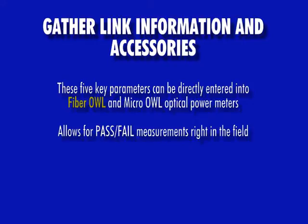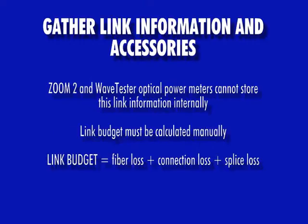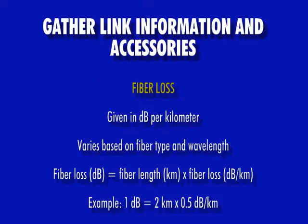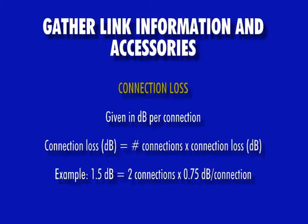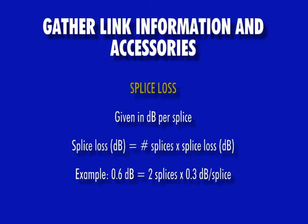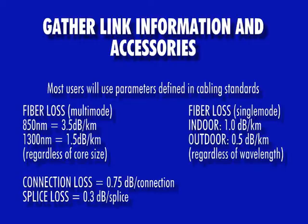When using a Micro OWL or Fiber OWL optical power meter, these parameters can be entered directly into the device to calculate the link budget. If the link budget needs to be calculated manually, it is done by adding together fiber loss, connection loss, and splice loss. Fiber loss is given in dB per kilometer and varies based on fiber type and wavelength. Most users will follow the fiber, connection, and splice loss specified in cabling standards such as TIA 568.